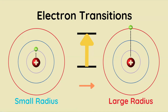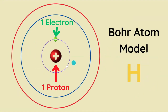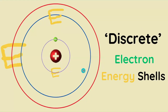How does an electron within an atom make the transition from a small radius to a large radius, or from a large radius to a small radius? The dynamics of electron movement is more or less the same for different atoms, but the Bohr atom — simply one proton and one electron — provides a simple understanding of electron behavior and movement within an atom.